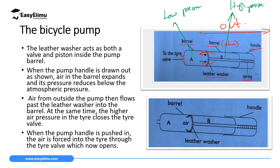When you push the handle in, you are compressing the air at Barrel A. When you compress air, you are increasing pressure, so Barrel A will now have high pressure. Inside the tire at this point, we have low pressure because we want to fill it. This high pressure will open the valve inside the tire, and the high pressure air will move into the tire.